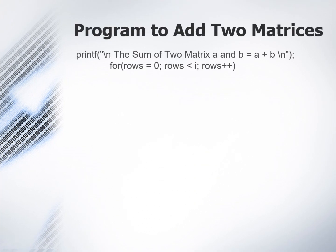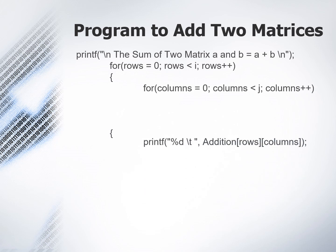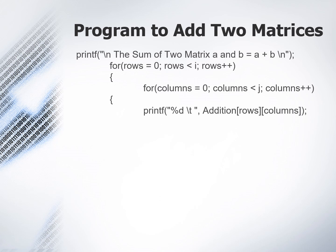After storing the sum in the addition matrix, we will display the addition matrix. So we have a similar nested for loop for that. Inside this nested for loop we have the print statement: printf percentage d slash t, addition rows columns. And in the end we will return an integer element.